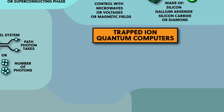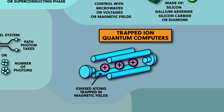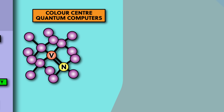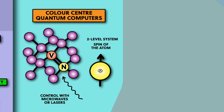Now onto trapped ion quantum computers, which use charged atoms as the qubits. These atoms are ionised — having a missing electron which makes them electrically charged — and means that they can be levitated and moved about with electromagnetic fields. Here the two level state that encodes the qubits are two specific energy levels of the atom, which can be manipulated or measured with microwaves or laser beams. Next we have colour centre or nitrogen vacancy quantum computers, which is similar to trapped ion quantum computers in that the qubits are made from atoms. But instead of being trapped in an electromagnetic field, they're embedded in a gap of the material, like nitrogen embedded in diamond or silicon carbide. Typically the qubits are the nucleus spins of the embedded atoms and they're entangled together with electrons.